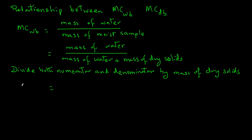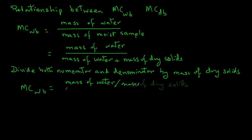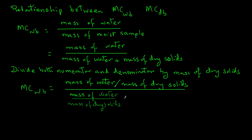And in the denominator, it will be mass of water divided by mass of dry solids plus — note that the mass of dry solids divided by mass of dry solids will cancel out — so we will be left with one.